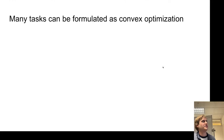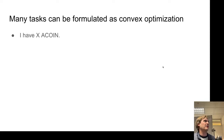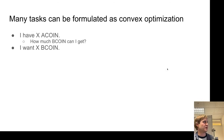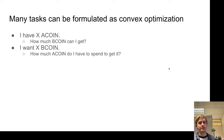So we can solve things through convex optimization. For example: say I have X amount of A coin and I want to trade it all for Bitcoin to get as much Bitcoin as possible. That's a convex optimization problem — the variables are how much Bitcoin am I getting from each exchange and how much A coin am I sending. Another version: I want a certain amount of Bitcoin — maybe that's the entry fee to some metaverse — so how much A coin do I have to spend? That's a dualistic version of the same problem.